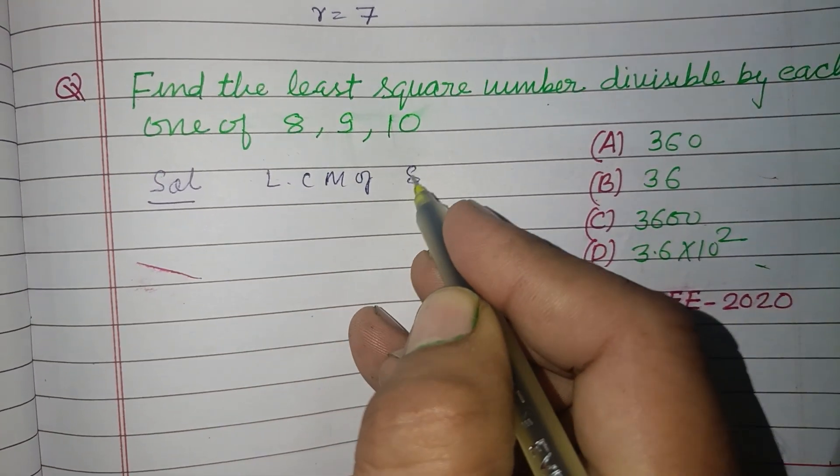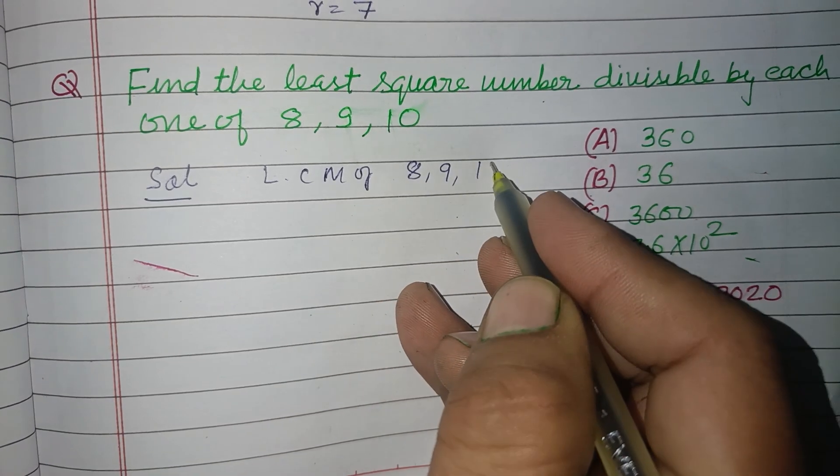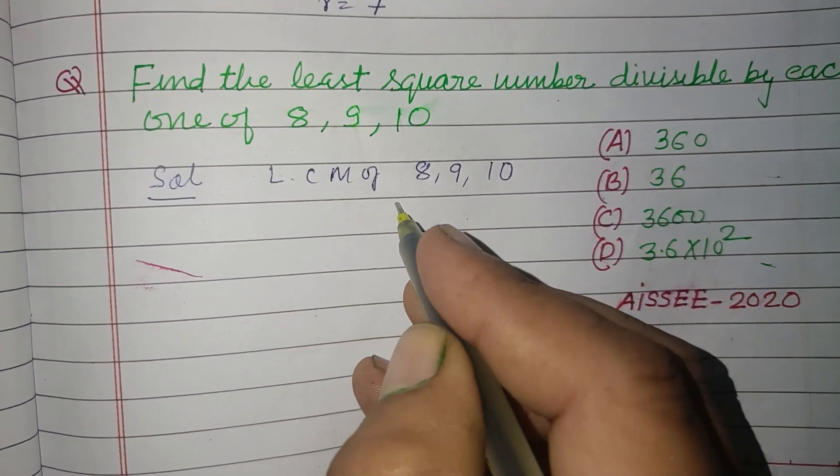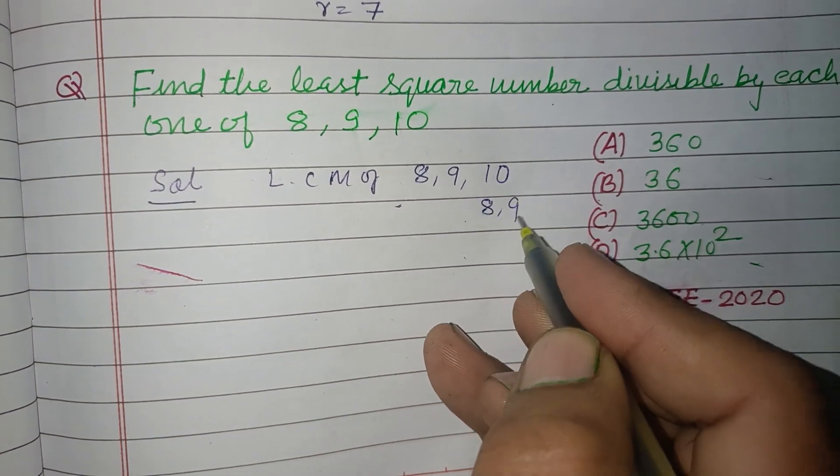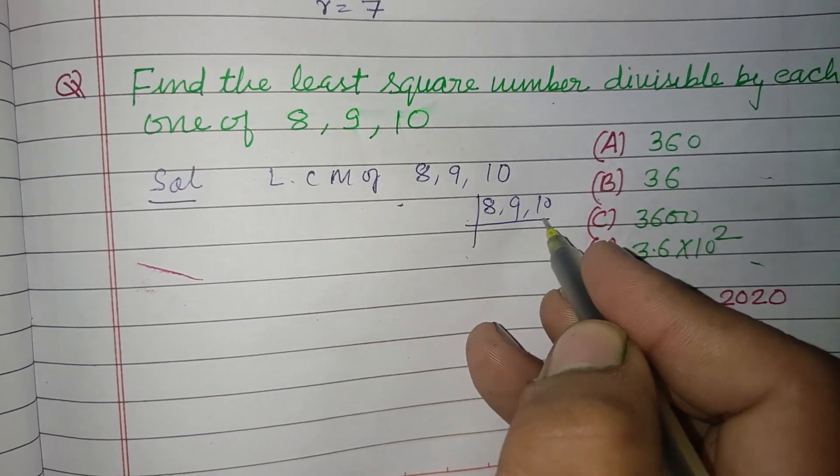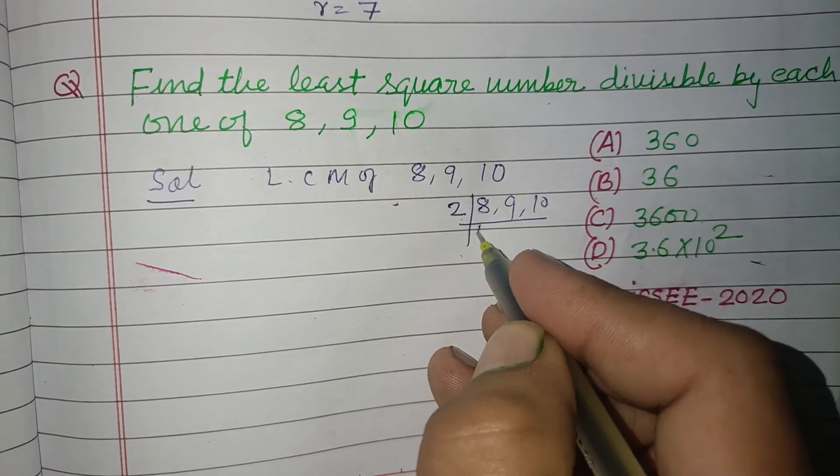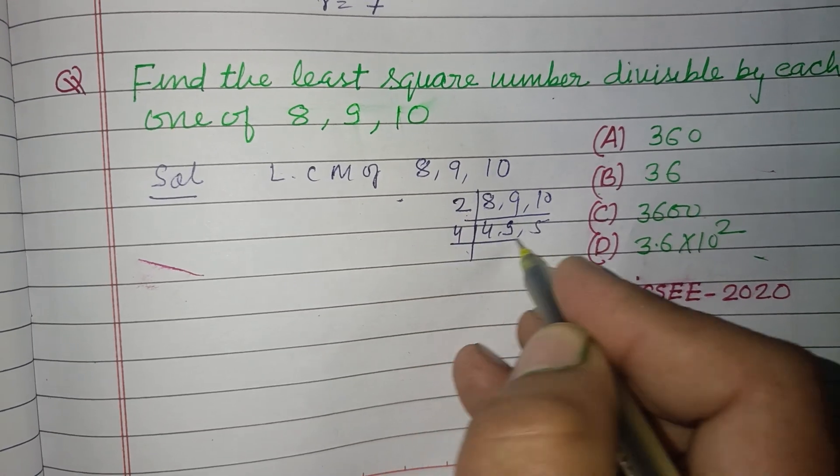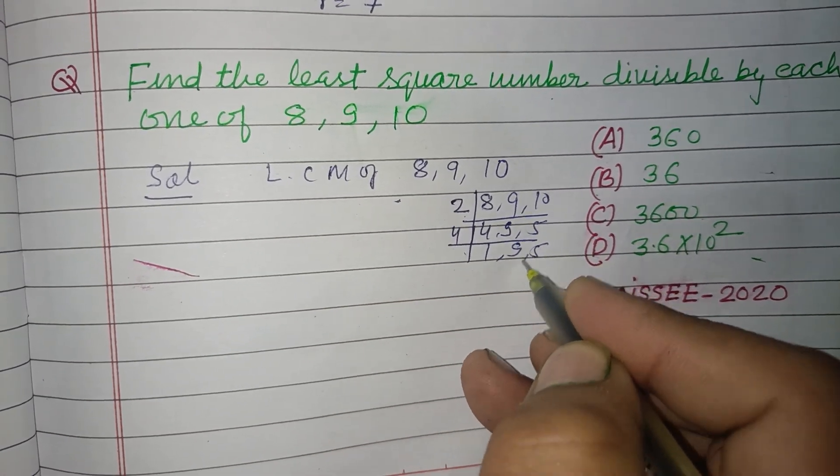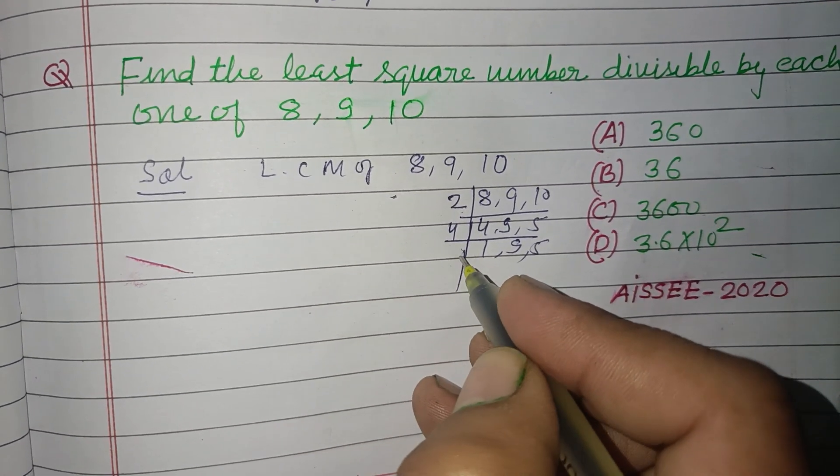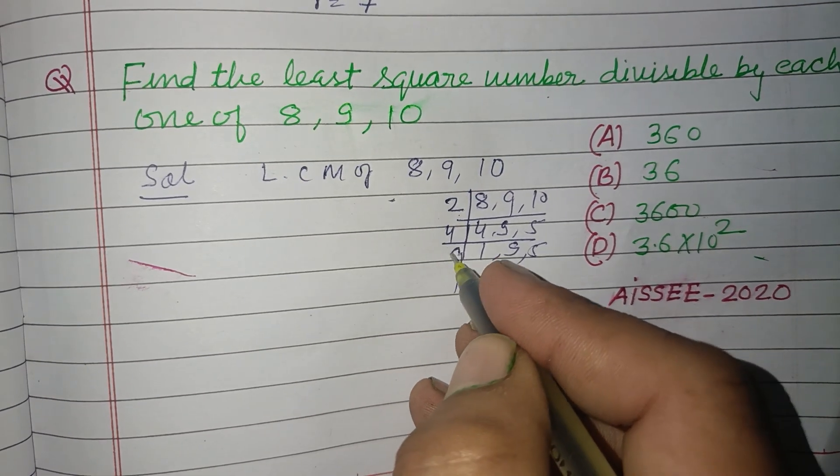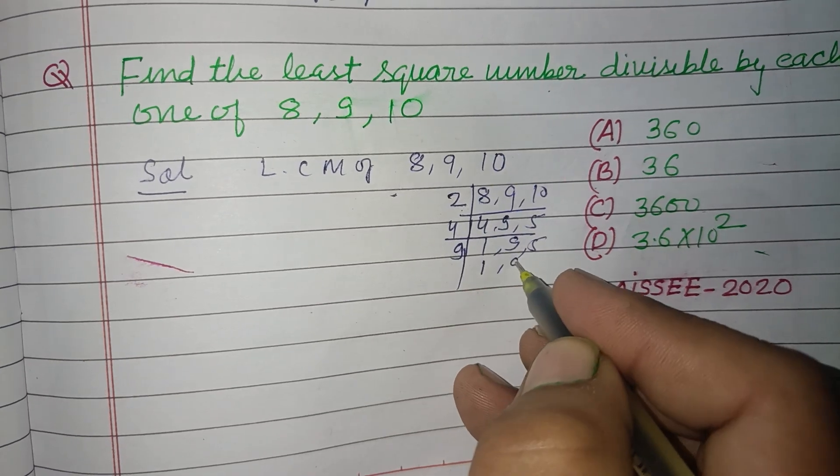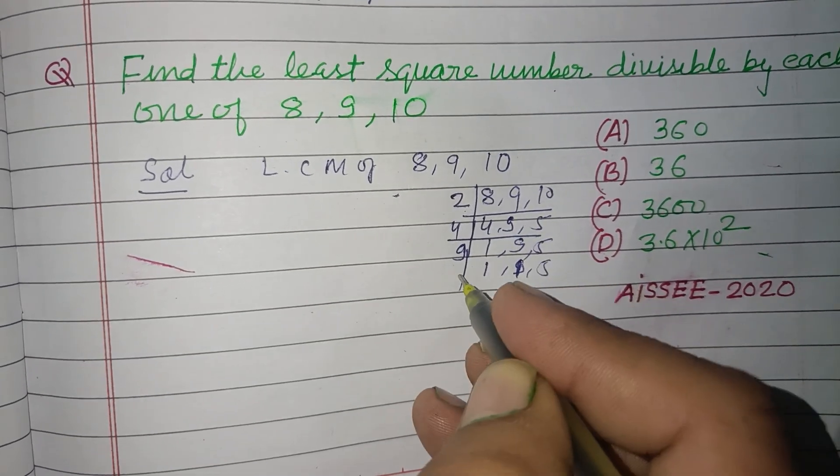LCM of 8, 9, and 10. So getting the LCM, I'm dividing by 2: 8, 9, 10. Then 2 again: 4, 9, 5. Now dividing by 2: 2, 9, 5. Next by 2: 1, 9, 5. Now by 9: 1, 1, 5.